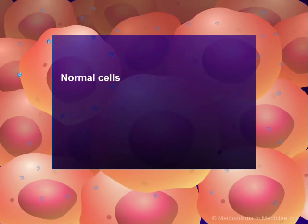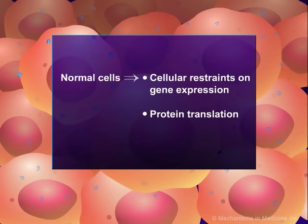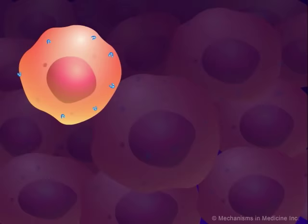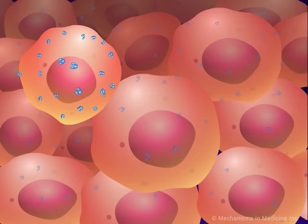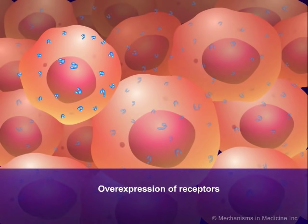In normal cells, the production of cell surface receptors is limited by cellular restraints on gene expression and protein translation. In tumor cells, however, mutations in the genes encoding for the receptors disrupt this finely tuned regulation, and too many copies of the gene are produced, a phenomenon called gene amplification. This, in turn, leads to excessive transcription and production of receptors. The end result is a higher than normal number of copies, known as overexpression of the receptor on the tumor cell surface.